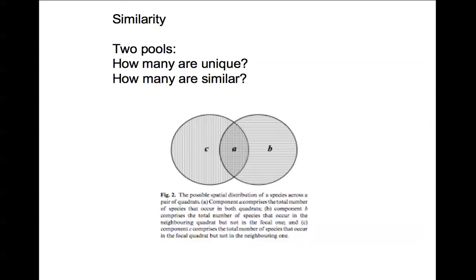Just to review: you just completed homework two, so you should have a good understanding of this. When comparing beta diversity across sites, depending on n — the number of sites or plots — you can have n minus 1 multiplied by n unique pairwise comparisons. In each comparison, A is the species the two plots share, B is the species unique to plot B, and C is the number of species unique to plot C.